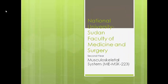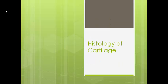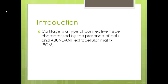Greetings everyone and welcome to this session of your Musculoskeletal System course. We're going to be talking about the histology of cartilage today. From your previous sessions, you should know that cartilage is a type of connective tissue, which means it generally connects between different parts of the body or different organs. It is characterized by the presence of cells with abundant extracellular matrix.